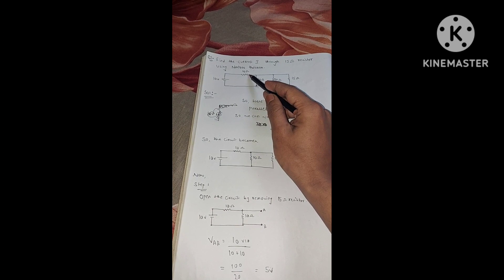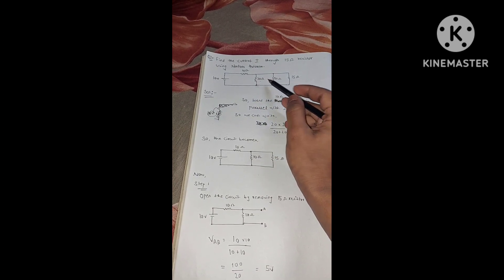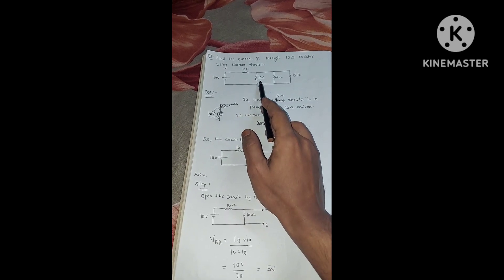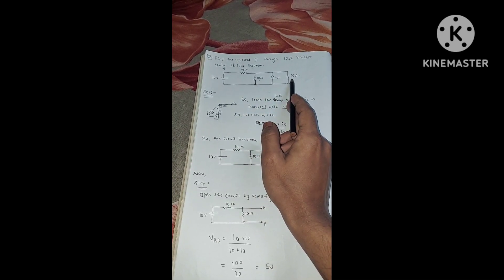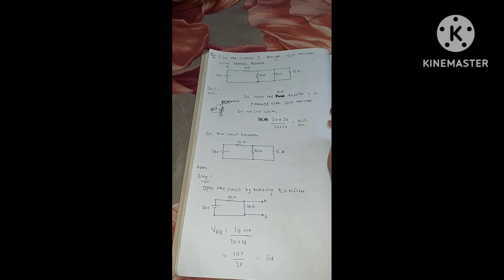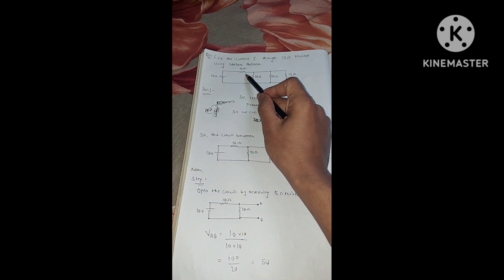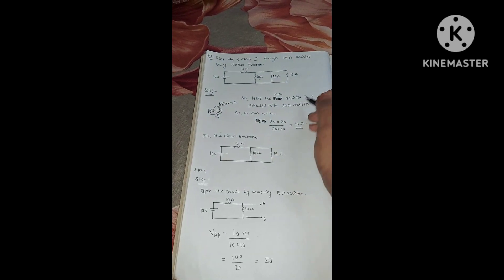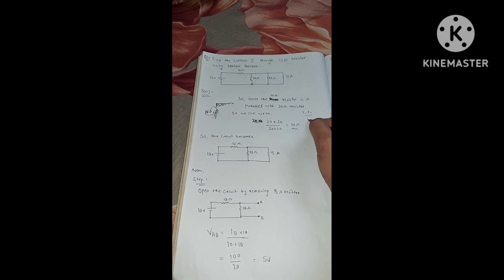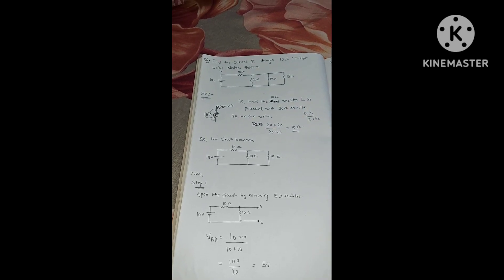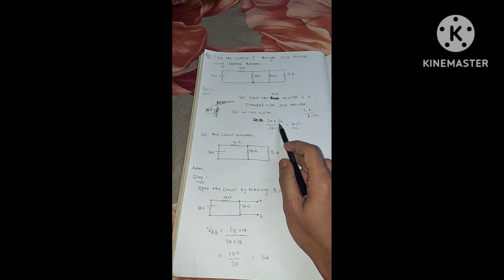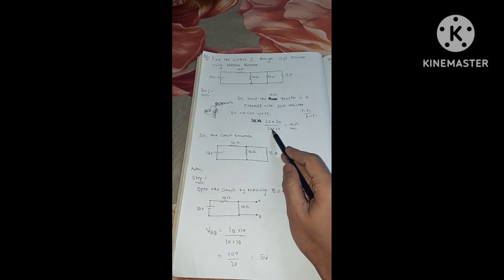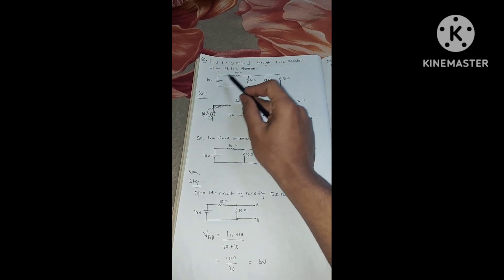A circuit is given here: 10 volts, one resistor of 10 ohms, and two resistors of 20 ohms each. If you see this circuit, the 10 ohm is in series and the two 20 ohm resistors are in parallel. The 15 ohm is your load resistance. For two resistors in parallel we use the formula R1×R2 / (R1+R2), so 20×20 / (20+20) gives us 10 ohms.